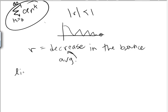We're going to take the limit as n goes to infinity. Sum from k equals 0 to n minus 1 of a*r^k.